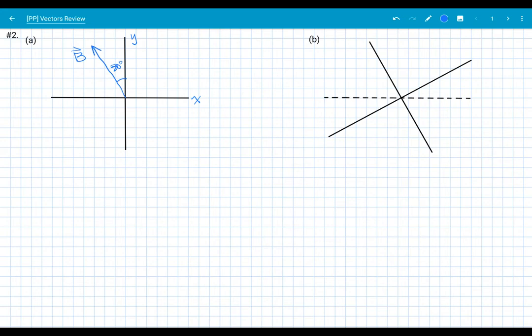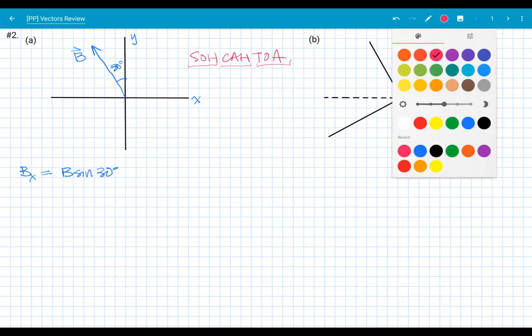So let's finish that for case A here, figuring out the x and y components. The x component here for B is going to be B, the magnitude of B, times the sine of 30 degrees. So remember your SOHCAHTOA. You'll need to review that if you haven't already. Right triangle trig is what we use a lot in here. SOHCAHTOA tells us that sine is opposite over hypotenuse, cosine is adjacent over hypotenuse, and tangent is opposite over adjacent. These are all ratios.